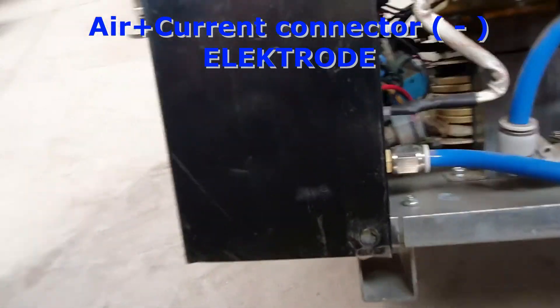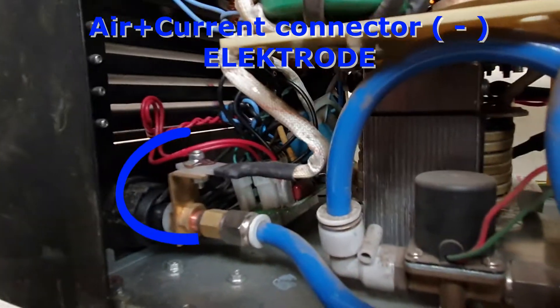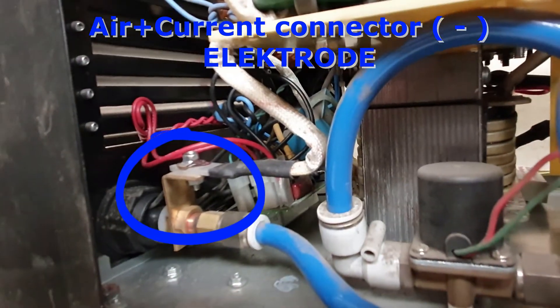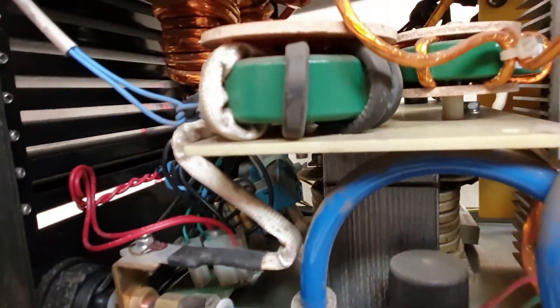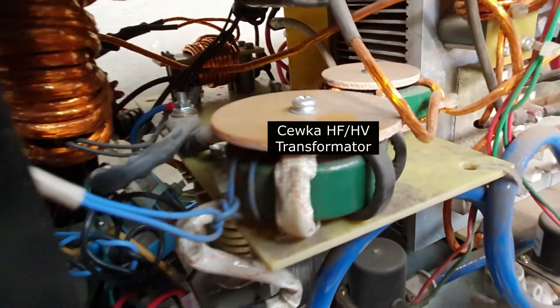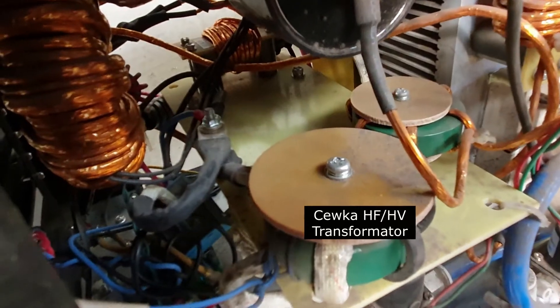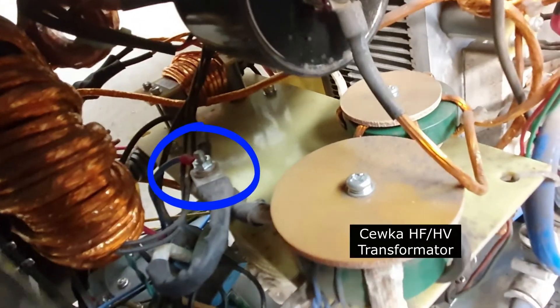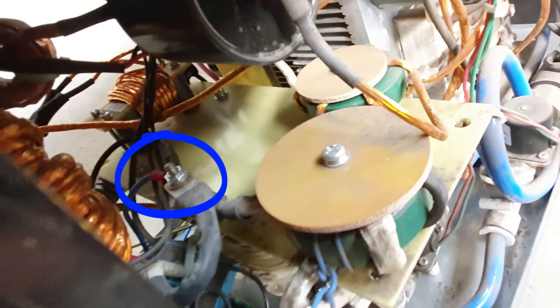Sources with HF/HV arc starting system often have a high voltage coil on the electrode wire. To minimize interference, it is recommended to connect the test lead before the coil and to use the shortest possible test leads.